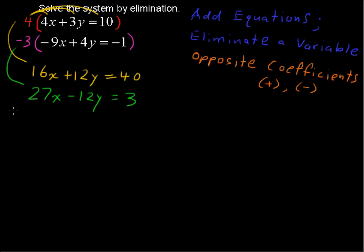Alright, let's add those. Add the equations, eliminate a variable. 16x and 27x is 43x. 12y and negative 12y is 0, equals 40 plus 3 is 43. Excellent. Divide by the coefficient and we get x equals 1. That is one of the values.